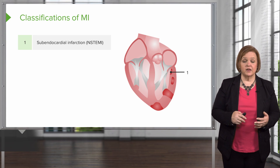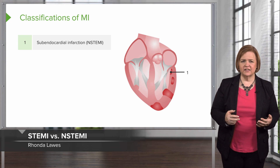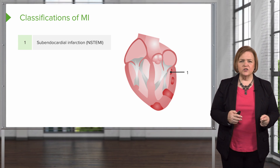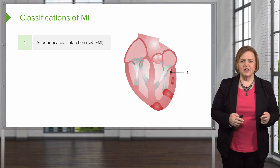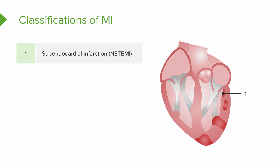How do we classify MIs? That's another way of saying how bad is it? Number one shows you a subendocardial infarction. That's a non-STEMI — a non-ST segment elevated MI — on an EKG. Look where it is: it's the farthest in and deepest to the tissue, but it's just subendocardial.